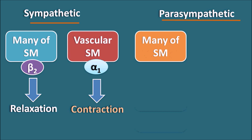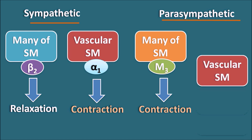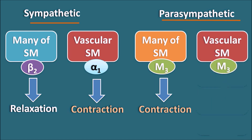At many smooth muscles, M3 receptors are present where the parasympathetic system produces contraction. The parasympathetic system has an exception at the vascular smooth muscle — M3 receptors are present but at this location they produce relaxation. The parasympathetic system has no direct innervation at the vascular smooth muscle, but it can release nitric oxide at the vascular endothelium. This nitric oxide is responsible for the relaxation of the vascular smooth muscle. In this way, the parasympathetic system produces contraction of all smooth muscles except the vascular smooth muscle.